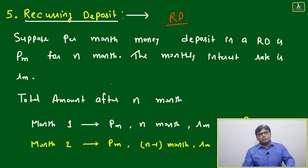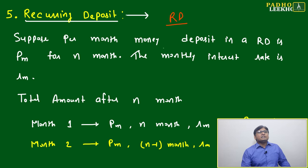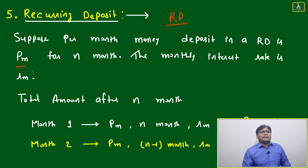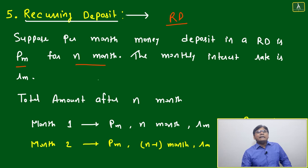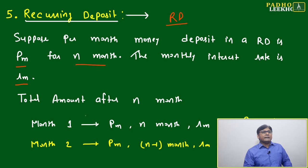For notation: the per month money deposited in an RD is PM. For N months, the monthly interest rate is RM. This is all just notation.